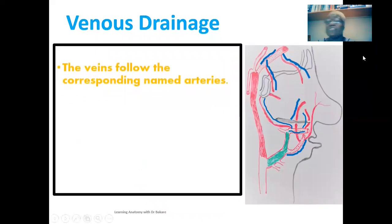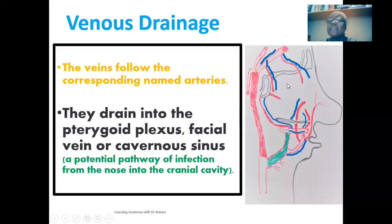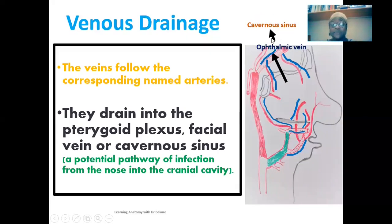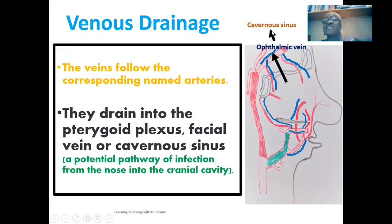Regarding venous drainage, the veins follow the corresponding named arteries — arteries are highlighted in red and corresponding named veins in blue. For the upper region, drainage is collected through the ophthalmic vein via the anterior and posterior ethmoidal veins, which drain into the ophthalmic vein and then into the cavernous sinus. This drainage pathway is a potential route for the spread of infection into the cranial cavity.